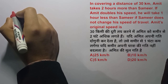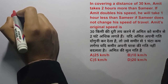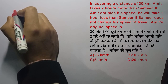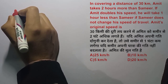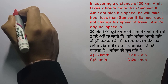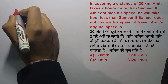The question says that in covering a distance of 30 kilometers, Amit takes two hours more than Samir. If Amit doubles his speed, he will take one hour less than Samir, if Samir does not change his speed. We need to find Amit's original speed.